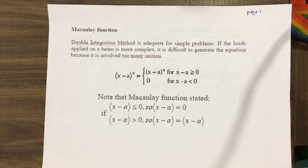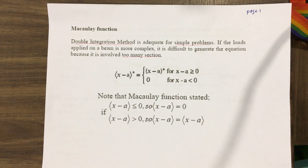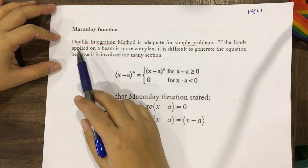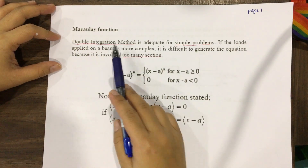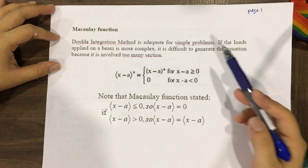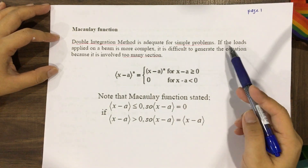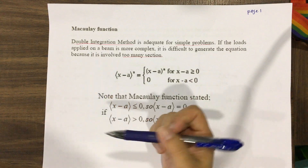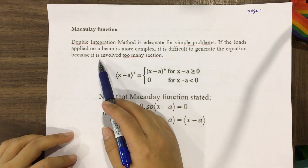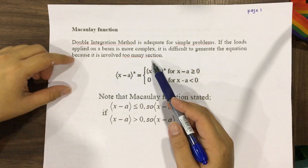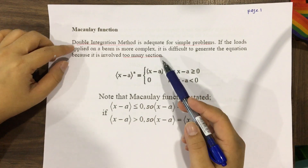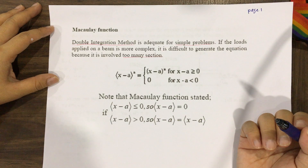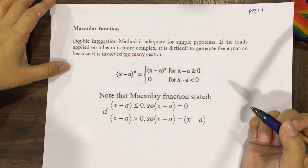Today we are going to learn about the second method, which is the Macaulay functions method. The double integration method is adequate for simpler problems, but if the load applied on the beam is more complex, it is difficult to generate the equations because it involves too many sections requiring many cuts. So another easier and simpler method is the Macaulay method.